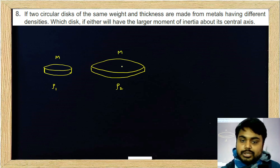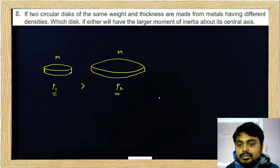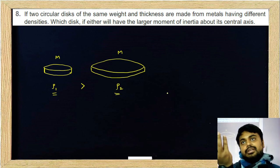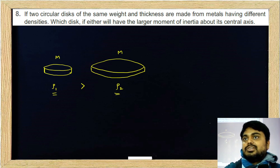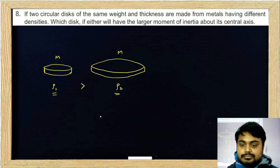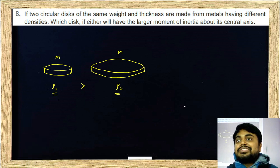The mass is the same. ρ₁ is greater than ρ₂. Density is lower, so the radius will be larger.